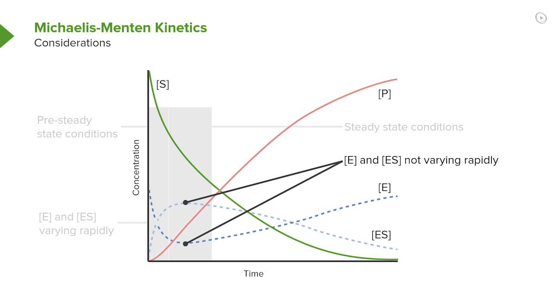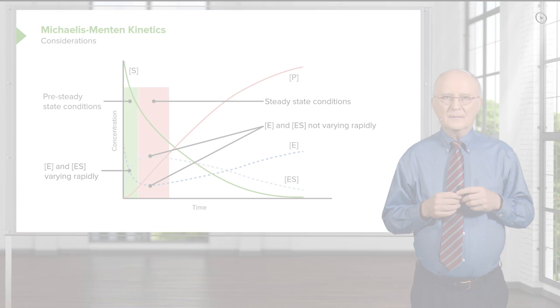Steady state conditions, of course, again, meaning that these quantities are not varying significantly. Now, we can see now the overall plot of what's happening on here. The steady state conditions are where we make our measurements, and we see that this relatively linear portion of the plot for the concentration of free enzyme and concentration of ES complex is happening under the conditions that we measure our enzymatic reactions.